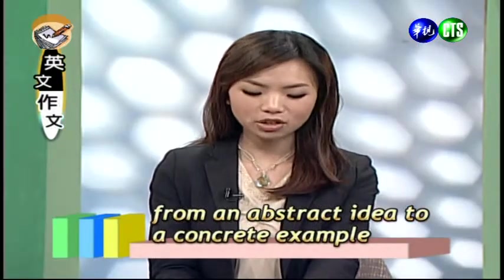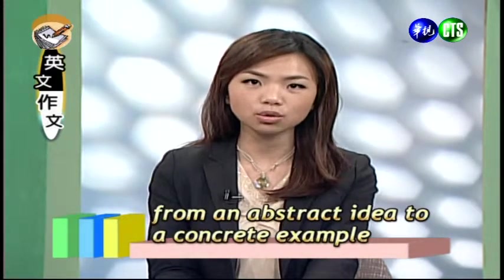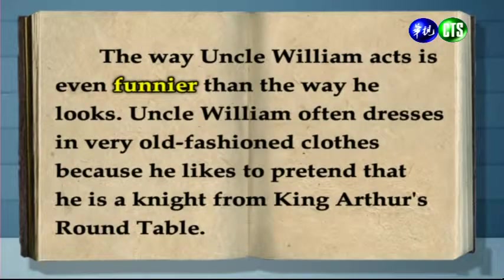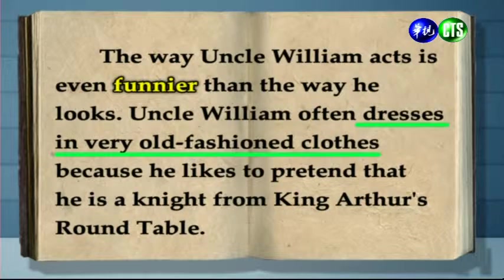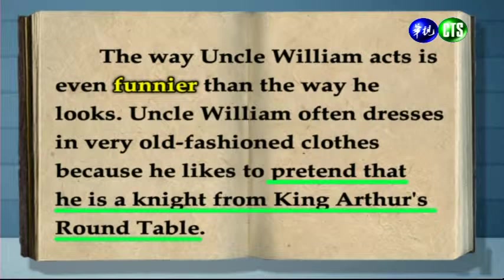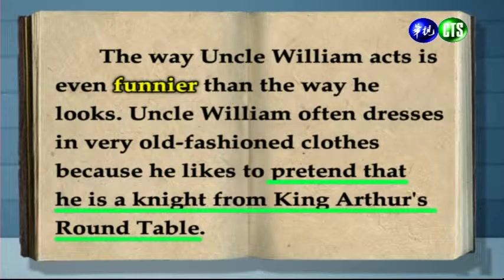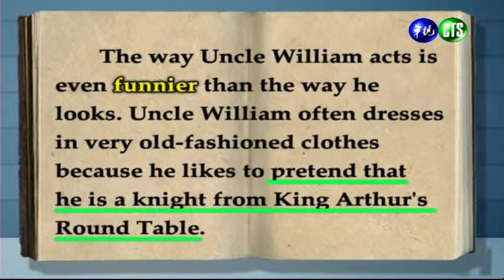Another way to interpret how this paragraph is organized is to say that it's moving from an abstract idea to a more concrete example. 另外一個方式則是從抽象變成具體，用這樣的順序來陳述事情。If we say that Uncle William acts funny, this is an abstract idea. 如果我們提到說威廉叔叔很好笑，那其實這是一個還蠻抽象的概念。Then to say that he dresses in old-fashioned clothes, this is moving towards a more concrete example. 接下來提到說他穿著比較過時的衣服，這已經漸漸地從抽象往比較具體的方面做一個移動。And finally, when we write he's pretending that he is a knight from King Arthur's Round Table, this is a very concrete example of Uncle William's funny actions. 最後提到說他的衣服就像是亞瑟王時代圓桌武士的衣服，那這就是一個非常具體的例子了。